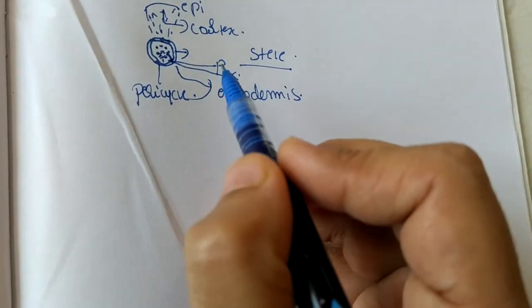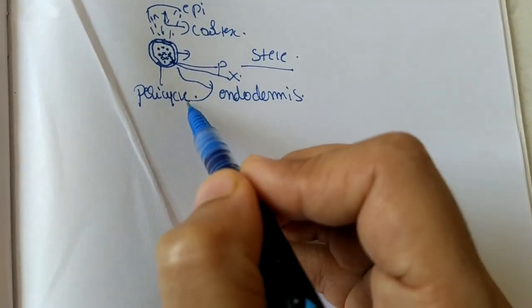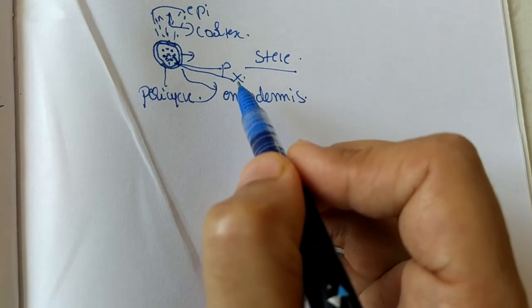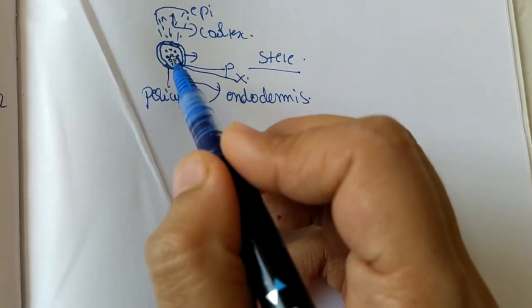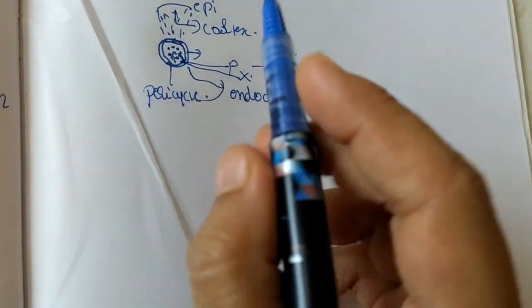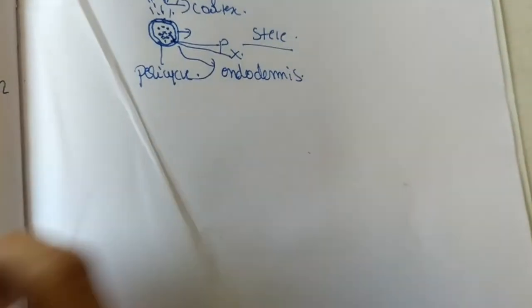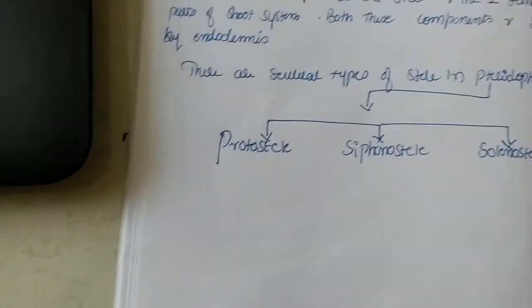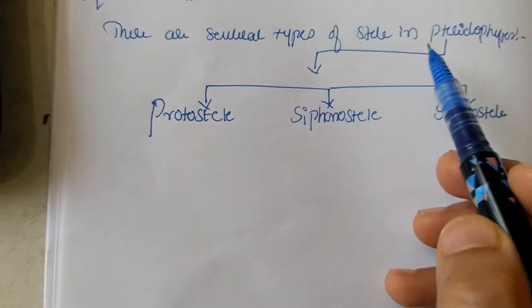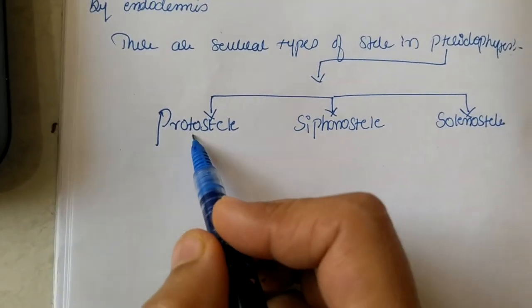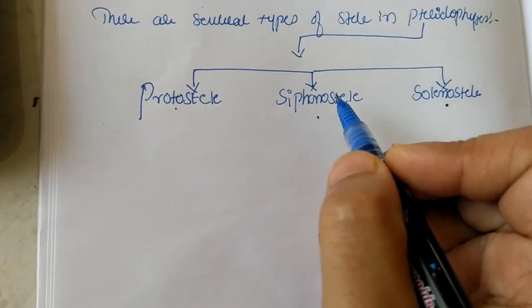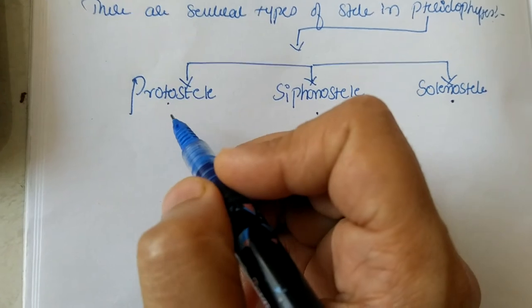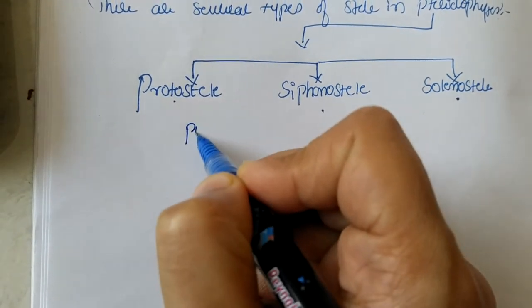So what does steel contain? It contains pericycle followed by phloem and xylem. There are chances whether the pith is present in the center or not. Based on this, steel is divided into different types like proto-stele, siphono-stele, and soleno-stele. It is divided based on the presence or absence of the pith.